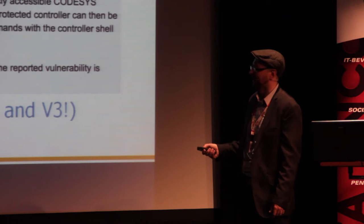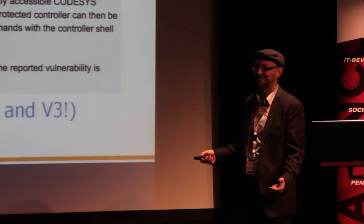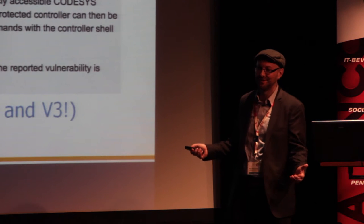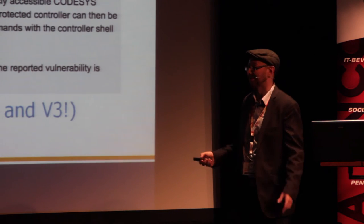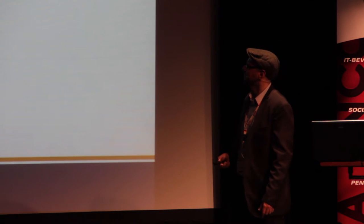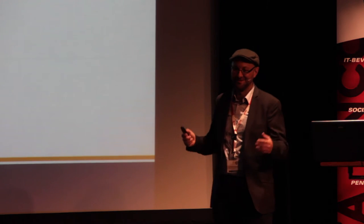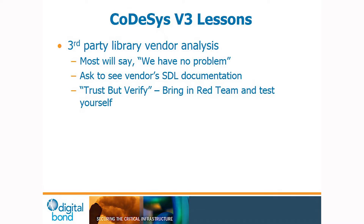At least 3S Software tells people that only OEMs can produce the patch — you can't download an update from 3S Software directly; you have to get it from your manufacturer, whether that's Festo, ABB, or whoever your vendor is. The lesson from the vulnerability announcement process is: trust but verify. Ask vendors for documentation showing they've done security testing of their library, but don't always believe them — in this case, 3S Software, I don't like to use the word lies, but that's what they did.